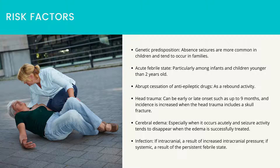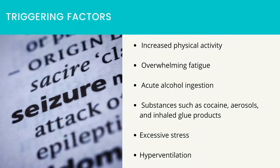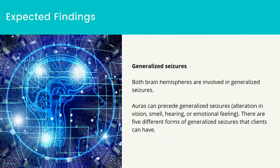Fluid and electrolyte imbalances result in abnormal levels of nutrients required for neuronal function. With older adult clients, increased seizure incidence is associated with cerebrovascular diseases. Triggering factors include increased physical activity, overwhelming fatigue, acute alcohol ingestion, substances such as cocaine, aerosols and inhaled glue products, excessive stress, and hyperventilation.